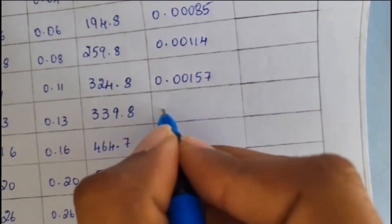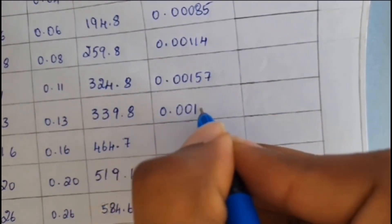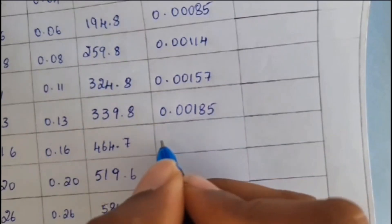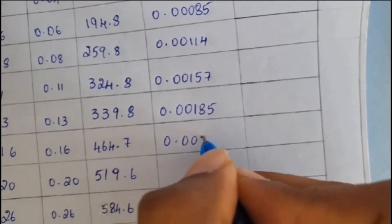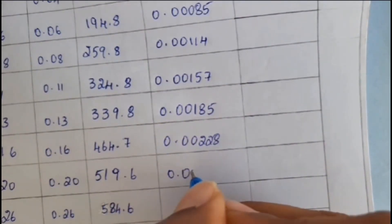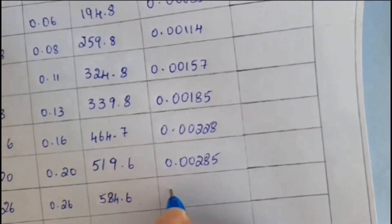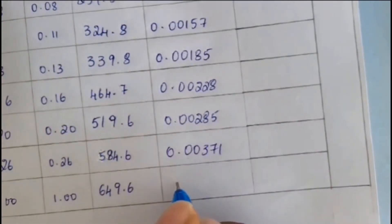0.00185. And 0.00225. And 0.00285. And 0.000371. And last I will be getting as 0.01428.